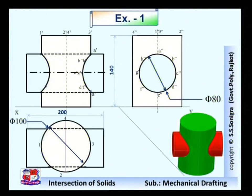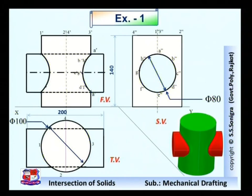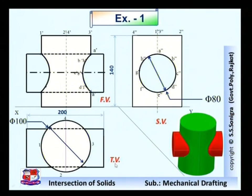Join these points with a smooth curve. As it is a cylinder, the smooth curve would be there. Insert the dimensions: diameter 80, height 140, width 200, and diameter 100. Name the views — front view, top view, and side view. Do not forget to represent the center lines and dotted lines.